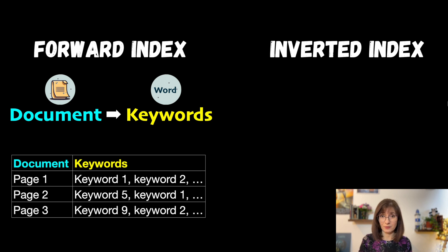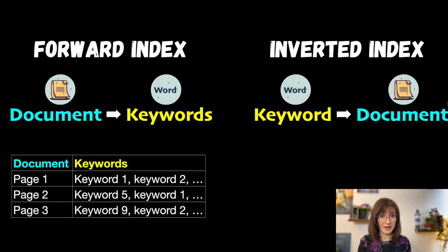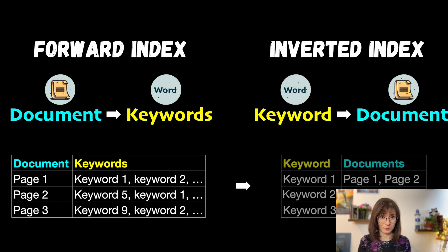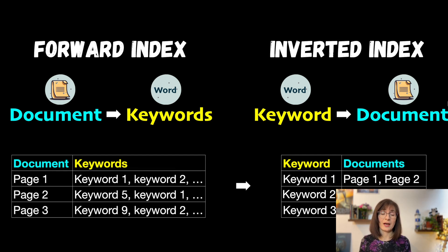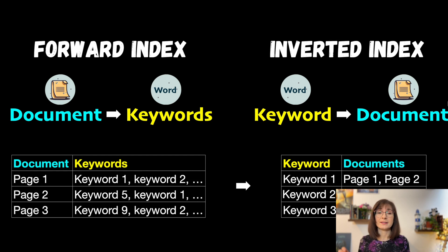The second approach is to take the data from the forward index and reverse it, and create a structure that maps the keywords back to the documents. In this way, if I'm looking for a particular keyword, I can find all the pages where it is mentioned.